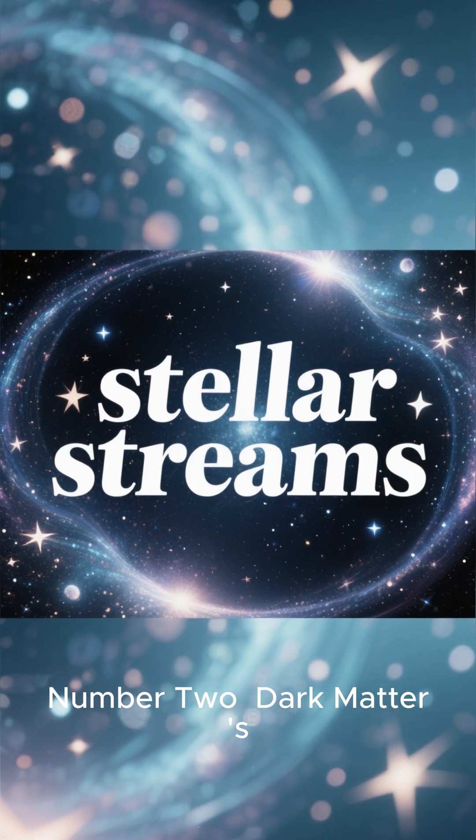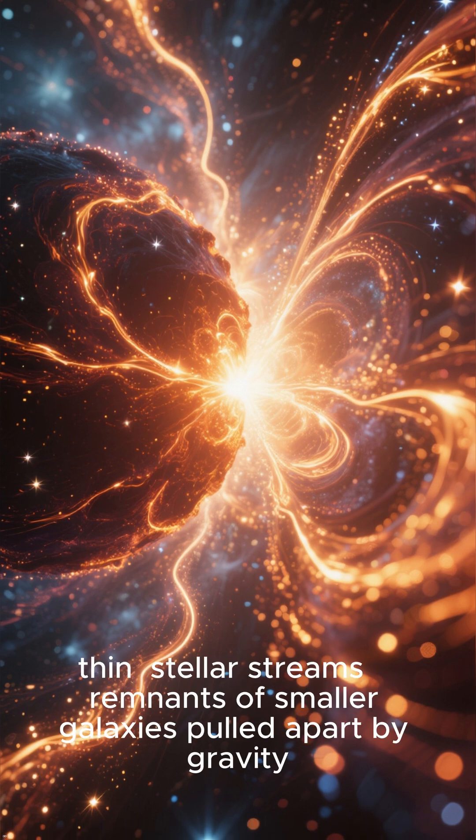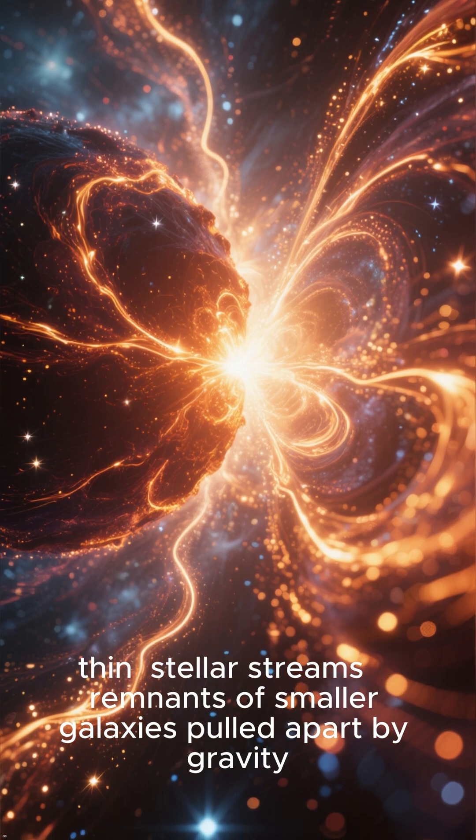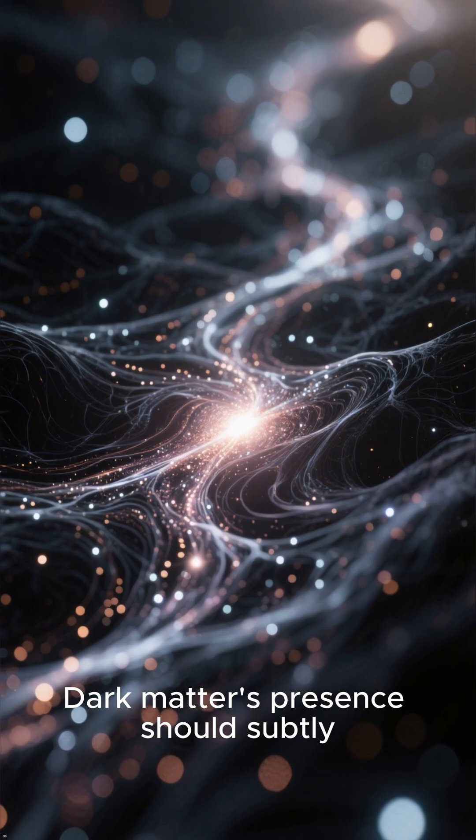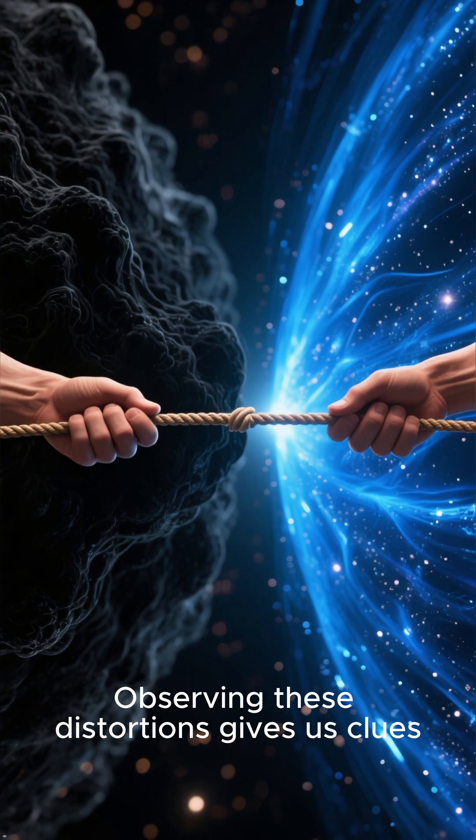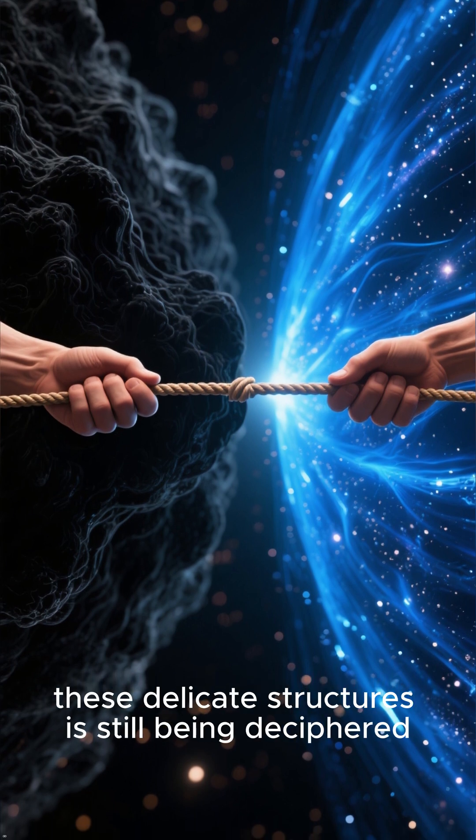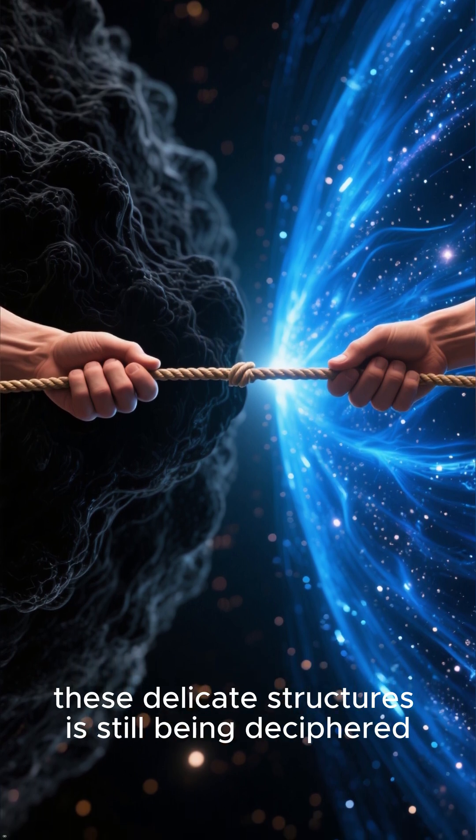Number 2: Dark Matter's Effect on Stellar Streams. As galaxies merge, they leave behind long, thin stellar streams—remnants of smaller galaxies pulled apart by gravity. Dark matter's presence should subtly alter the shapes and densities of these streams. Observing these distortions gives us clues, but the precise way dark matter influences these delicate structures is still being deciphered.